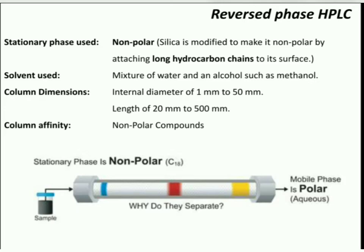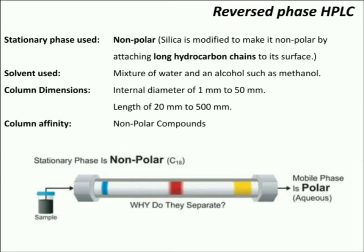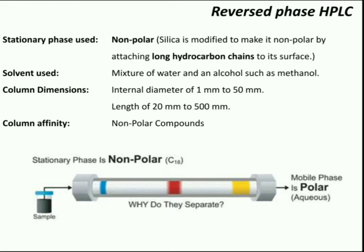The next type is reverse phase HPLC. As the name suggests, in reverse phase chromatography a nonpolar stationary phase is used. The polar stationary phase is made nonpolar by attaching long hydrocarbon chains to its surface. A polar solvent is used, for example a mixture of water and alcohol such as methanol. Column dimensions are internal diameter of 1 mm to 50 mm and length of 20 mm to 500 mm. The column affinity is for nonpolar compounds, so the polar compounds will pass more quickly through the column.